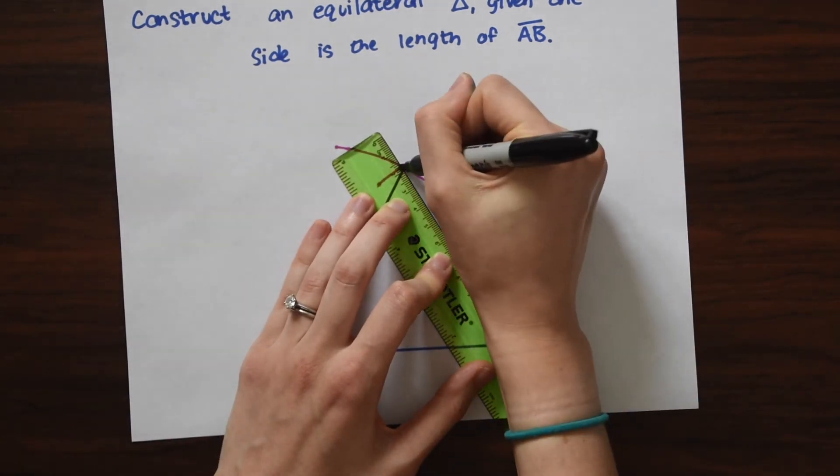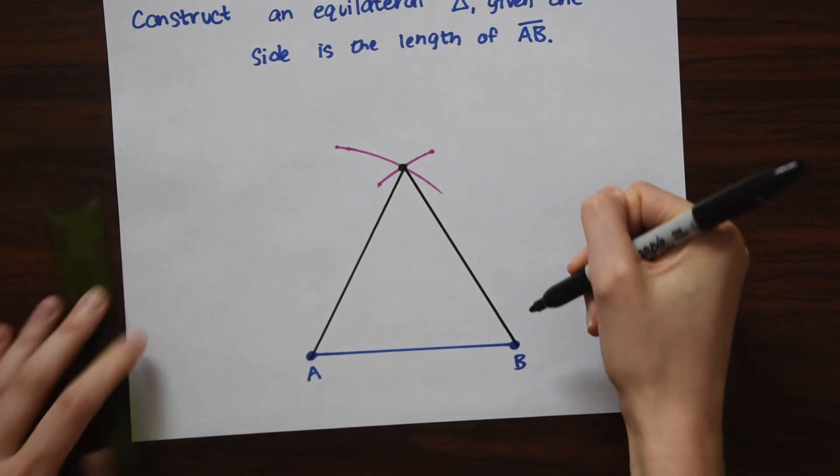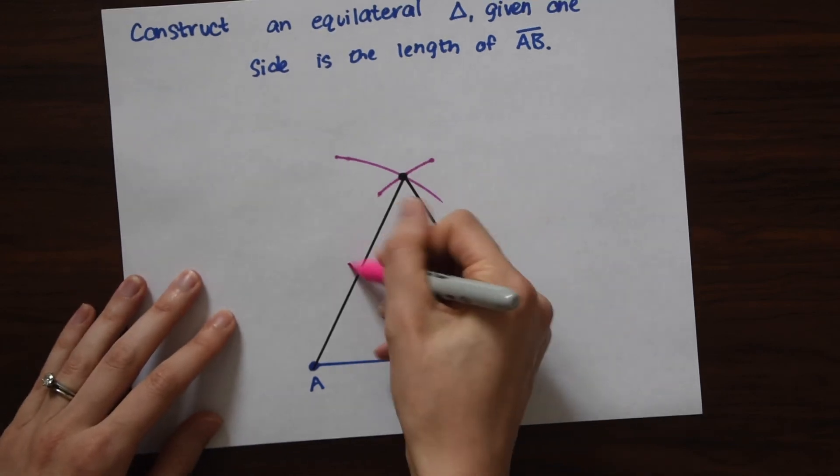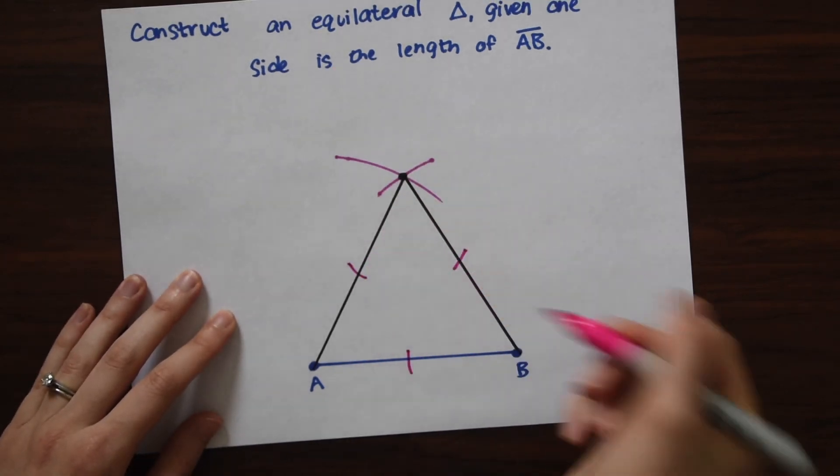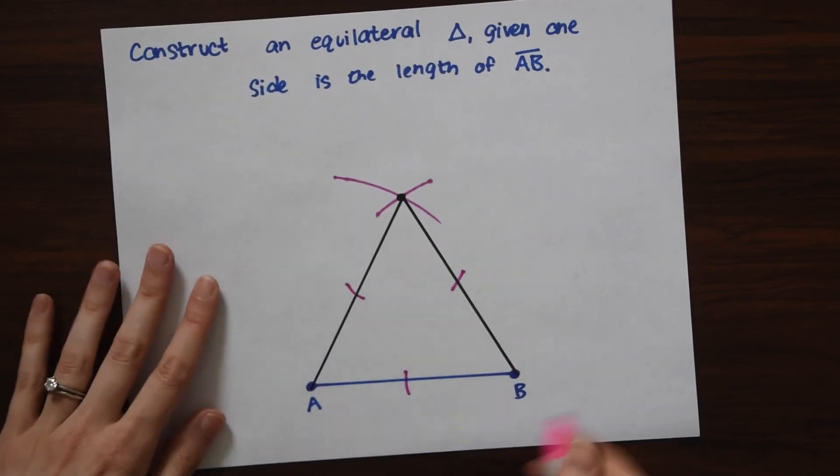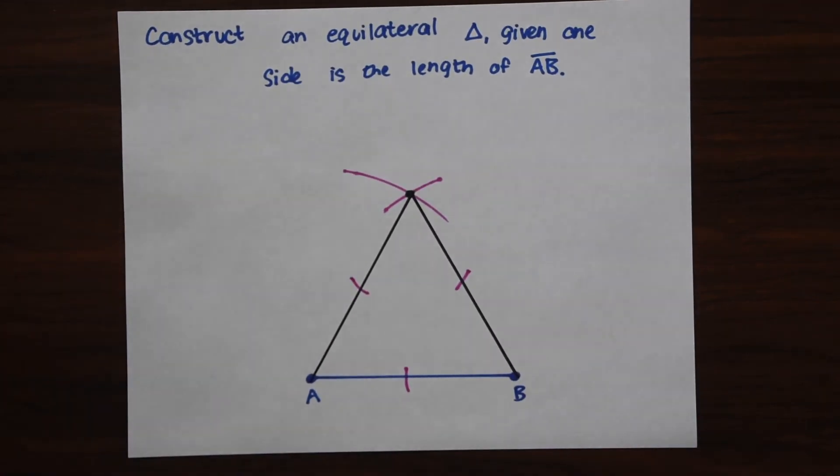And now we're going to draw a line from B to our new point. So we'll go to B, draw a line and notice that these lines are all equal to each other so we can mark it this way. That's what these pink lines mean - each side is equal to each other and we have our equilateral triangle.